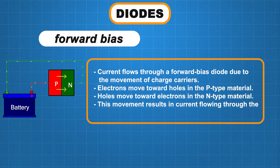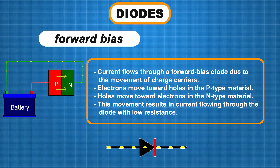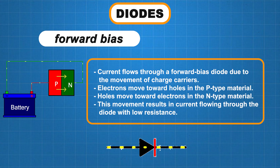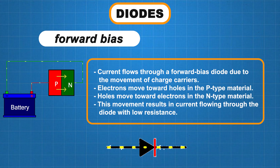In forward bias, electrons move toward the holes in the P-type material and holes move toward the electrons in the N-type material. This creates a smooth path for current to flow.